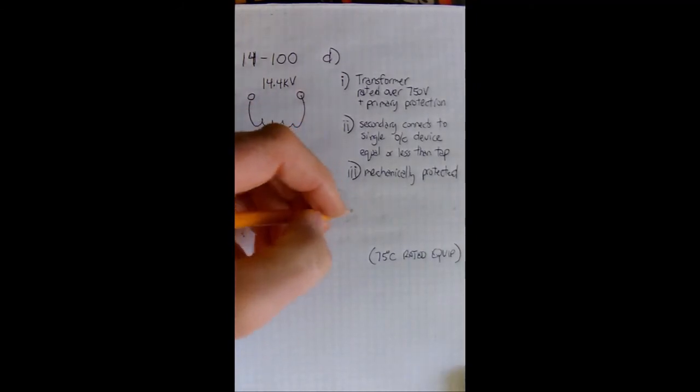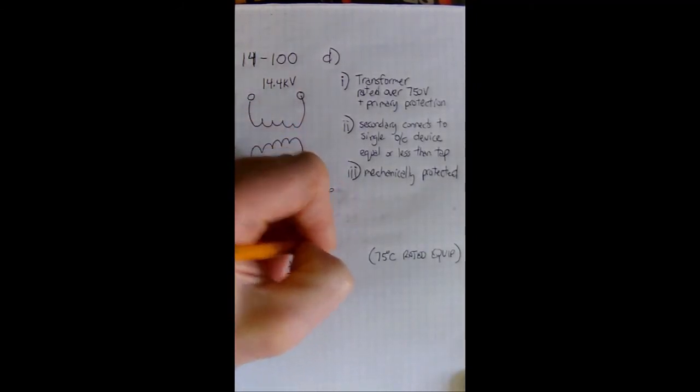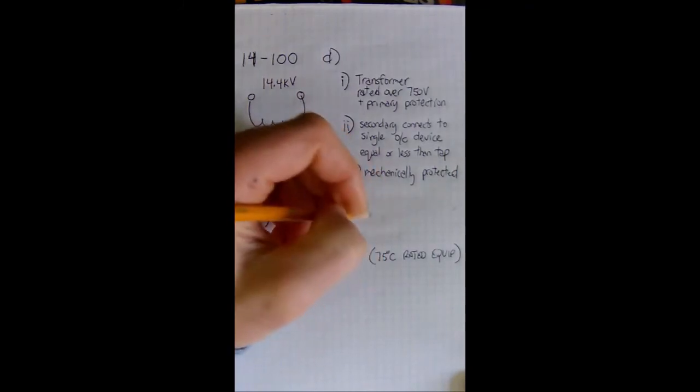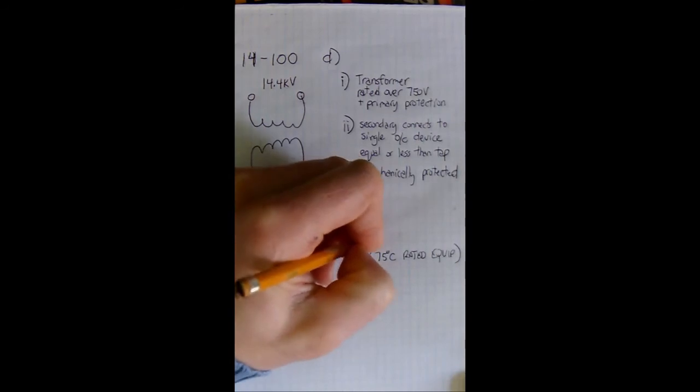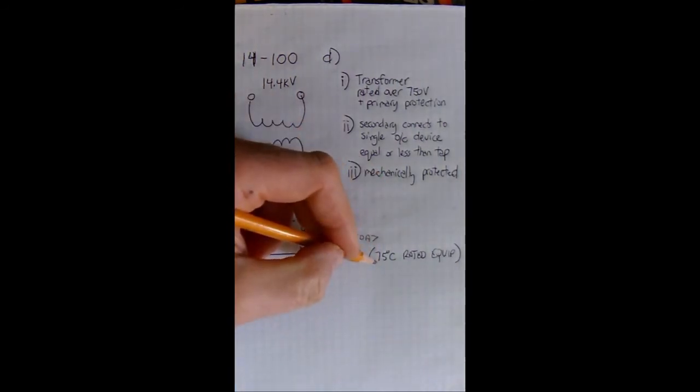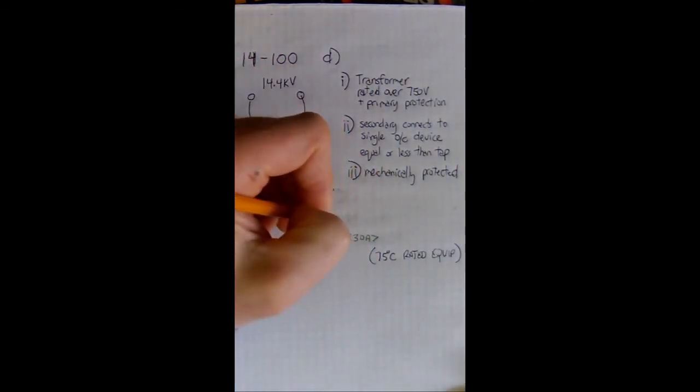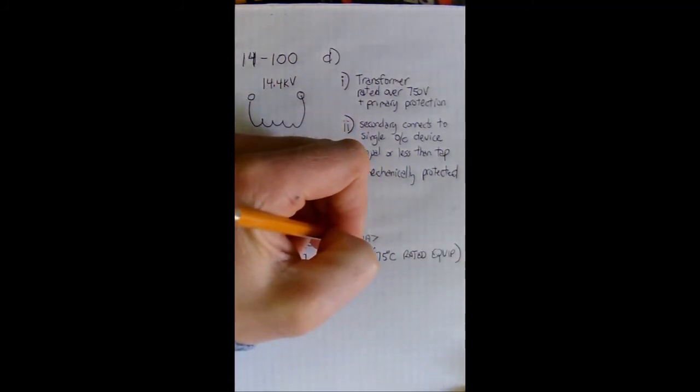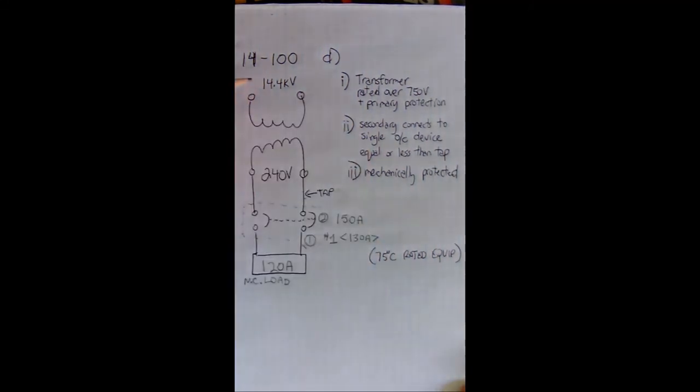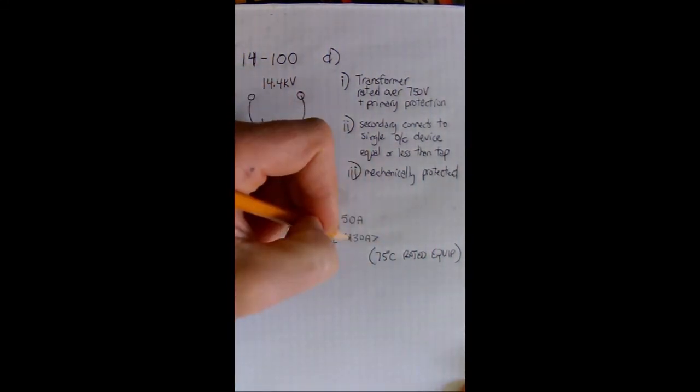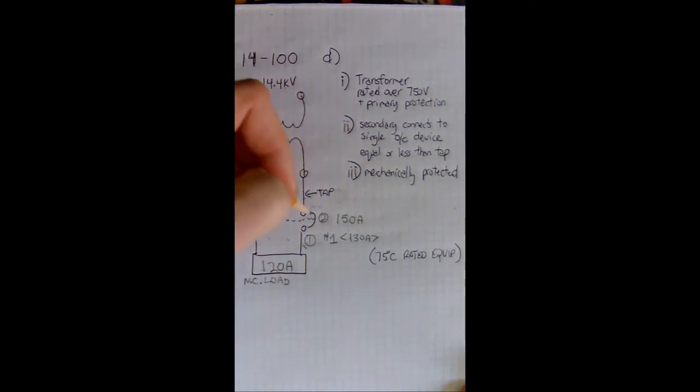Go to table two and we see a number one AWG conductor is good for 130 amps. Again we're in the 75 degree rated column. Step two, we go to table 13. We size a breaker off this 130 amps and we put in a 150 amp breaker based upon this wire. Now this is where item two comes in.